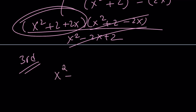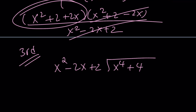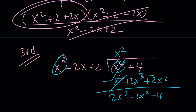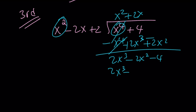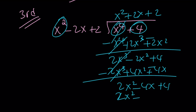The third method is long division. x squared goes into x to the fourth giving x squared; distributed we get x to the fourth minus 2x cubed plus 2x squared. Negate and add: we get 2x cubed minus 2x squared plus 4. Then 2x times the divisor gives 2x cubed minus 4x squared plus 4x. Negate and add again: 2x squared minus 4x plus 4, which is exactly 2 times the divisor, giving remainder 0. So the answer is x squared plus 2x plus 2.